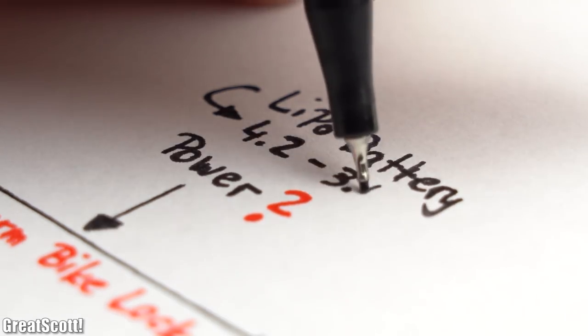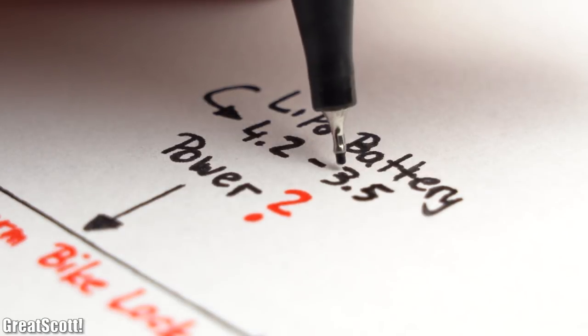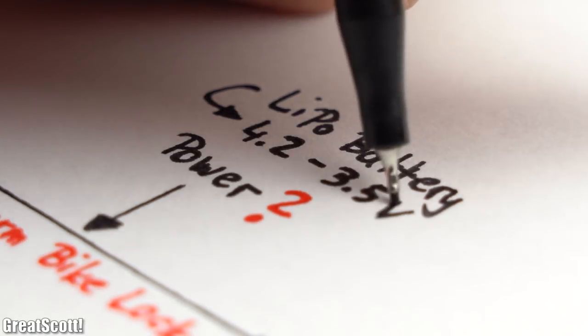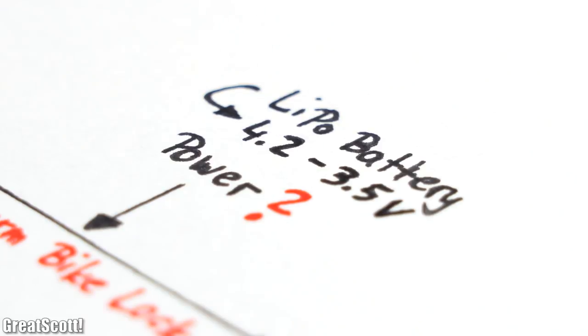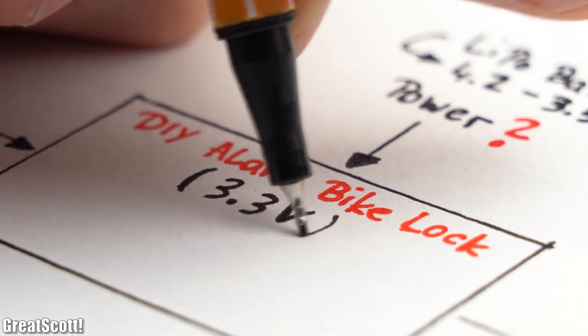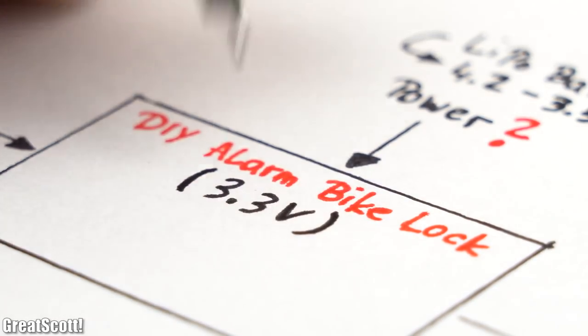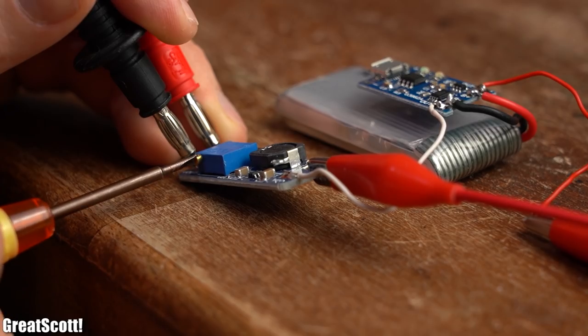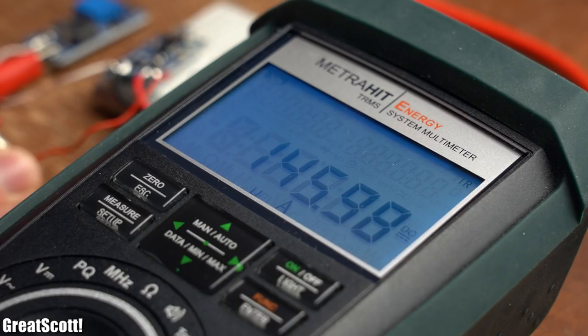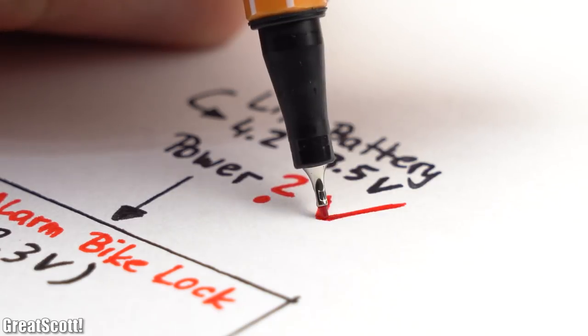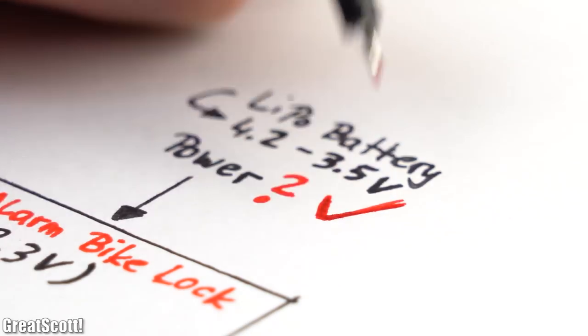Now our battery can deliver us a voltage range between 4.2 volts and around 3.5 volts, which means our main electronics need to work with 3.3 volts because stepping up a voltage would require too much standby current. And just like that the power question was answered.